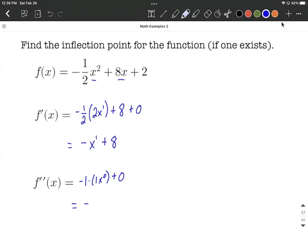This reduces down a little bit further. We get negative 1, and then x to the zero power is going to be 1. So that's multiplied by 1, and we can drop the zero at the end. We get negative 1 for our second derivative.